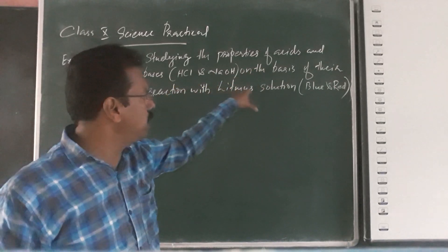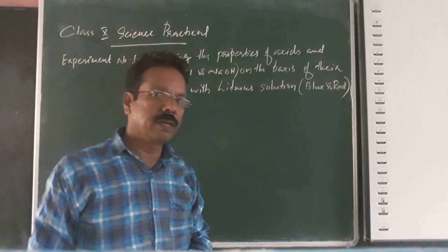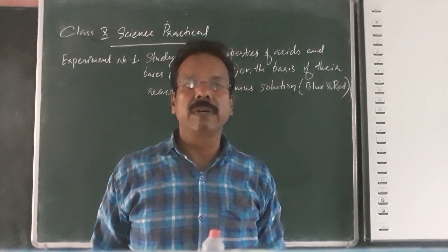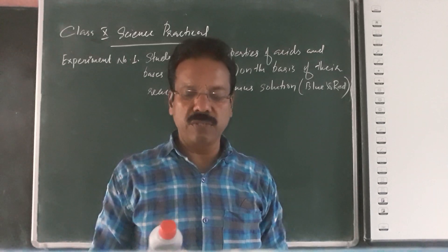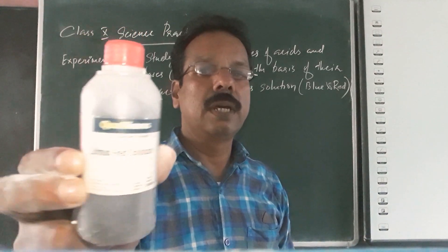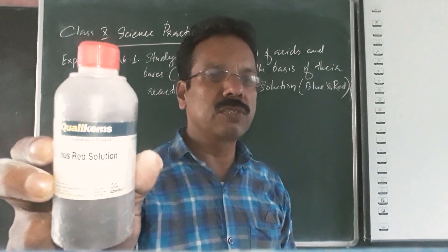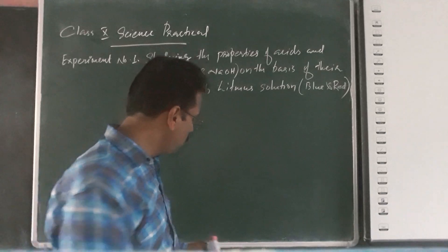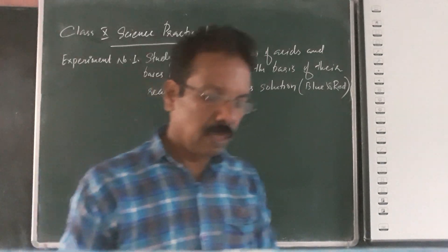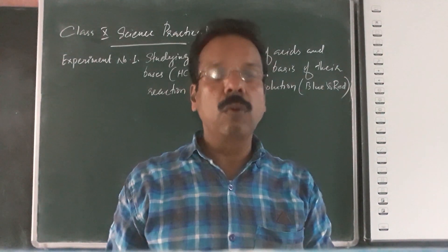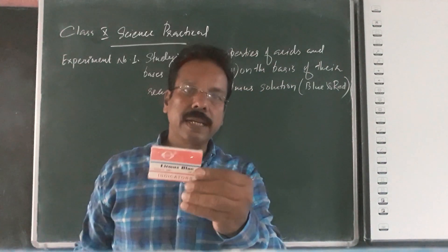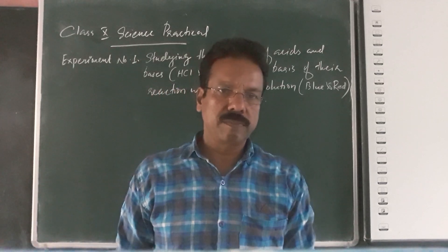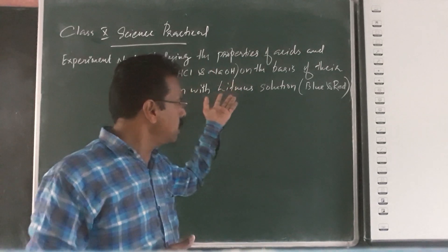On the basis of their reaction with litmus solution — litmus paper or litmus solution. Litmus solutions are indicators. Indicators check whether a given solution is acidic or basic. We have red litmus solution, blue litmus solution, red litmus paper, and blue litmus paper. We will use either solution or paper to conduct the experiment in the science lab.